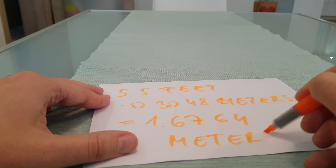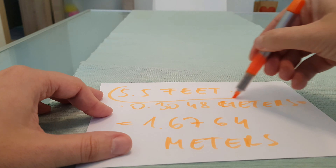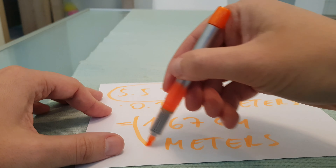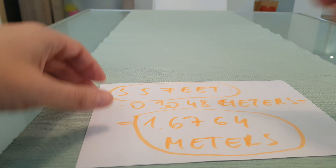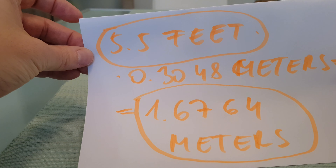Here is the solution. Again, 5.5 feet equals 1.6764 meters.